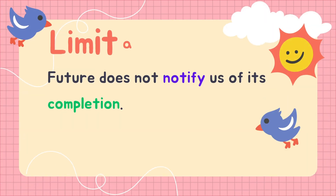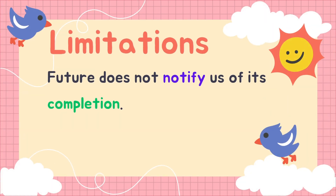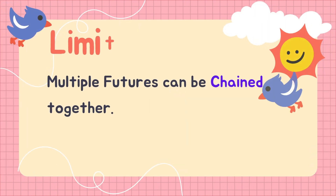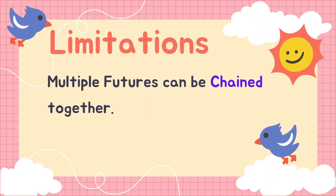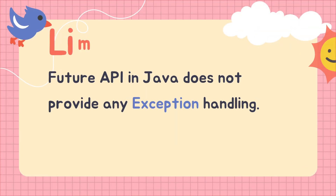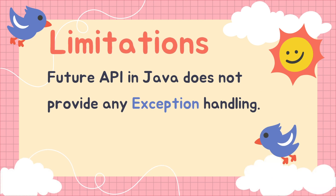Future does not notify us of its completion, meaning we have to block the processing using the get() method call to see if the task is completed or not. We cannot perform any further action on the Future's result without blocking. Also, if one Future task's output is required as input for another Future task, we cannot create such workflows where multiple futures are chained together.